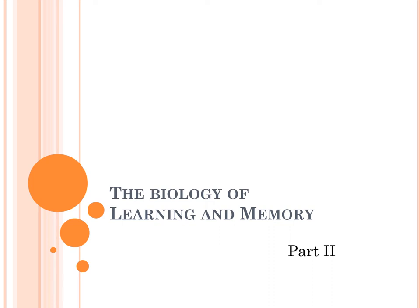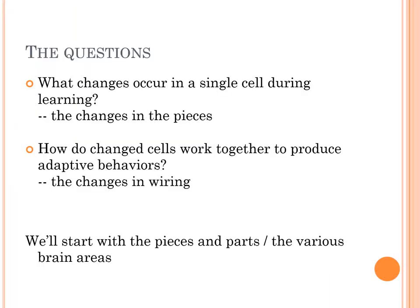This is the second part of the biology of learning and memory. I'm going to come back to questions of what changes occur in a single cell during learning — the changes in the pieces, then the changes in the wiring. How do those changed cells work together to produce adaptive behaviors? I'll start by talking about the various brain regions involved, specifically the groups of neurons responding to specific kinds of stimuli.